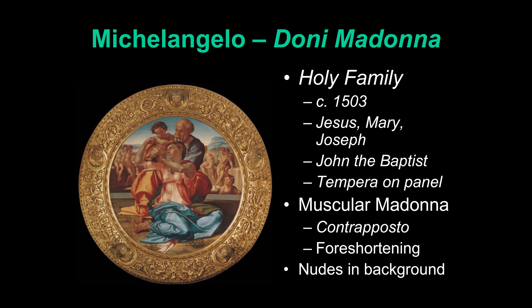Michelangelo was first trained as a painter and preferred carving, but he was also given commissions in paint. Whenever he painted on panel — and there aren't very many — it would be tempera on panel. He did not use oil paint as many other artists of the time did, like Leonardo and Raphael. He stayed true to the traditional media used in Florence in the 15th century. Most of his paintings are actually frescoes, but let's look at one of his tempera paintings.